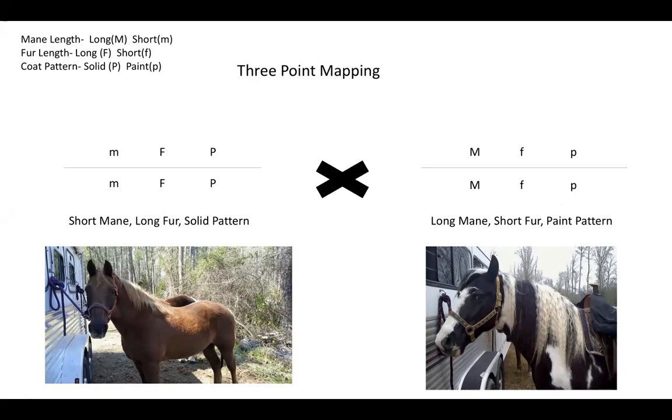Let's look at a few pictures of my horses. Let's look at the bottom left. His name is Snapper. He's a short mane, long fur, solid pattern horse with a genotype of lowercase m, uppercase F, and uppercase P.